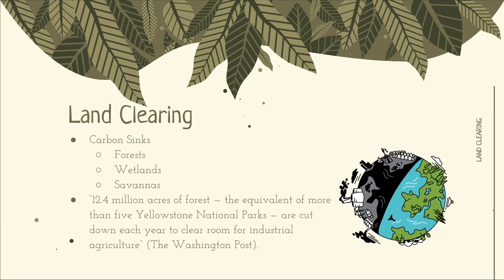Forests, wetlands, and savannas are all areas of land determined as carbon sinks — natural reservoirs that absorb more carbon than they release and lower the concentration of CO2 from the atmosphere. Since these areas are being destroyed to clear way for more grazing ground and meat industry use, we are losing that feature and adding more CO2 into the air. According to the Washington Post, 12.4 million acres of forest — the equivalent of more than five Yellowstone National Parks — are cut down each year to clear room for industrial agriculture.